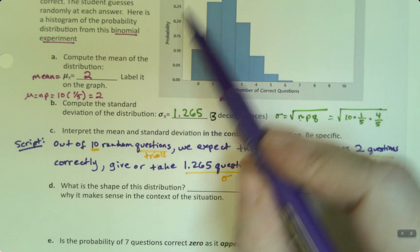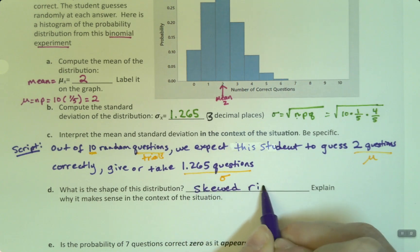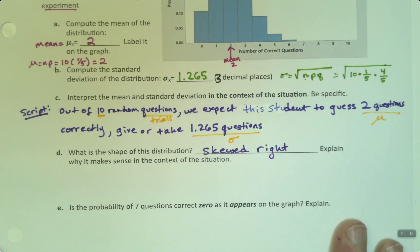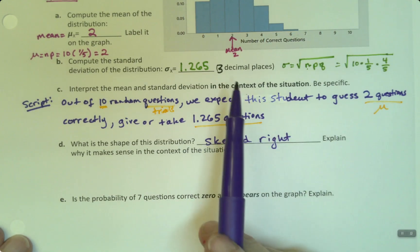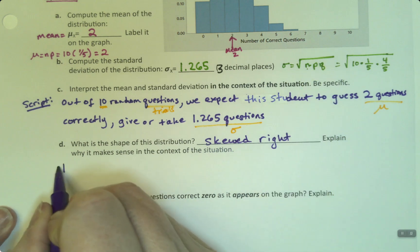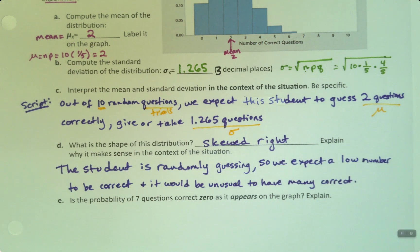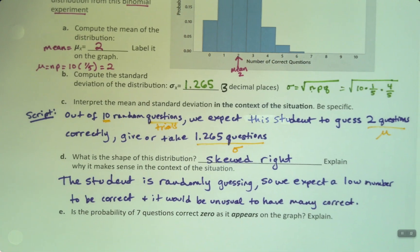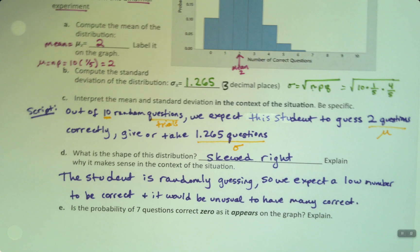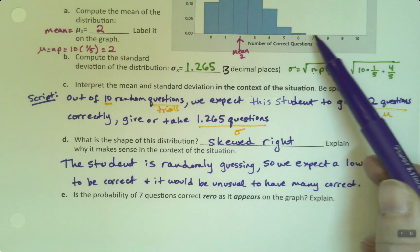What is the shape of this distribution? Well, it's obviously skewed right. Explain why it makes sense. Well, the student is randomly guessing. We don't expect them to get a lot of questions correct. It would be unusual to get a lot of questions correct. Because the student is randomly guessing, we expect a low number to be correct. That's why all the bars on the low side are nice and tall, because that's what we expect. We expect it a lot on the low side. It would be very unusual for the student to guess many correct. That's why it's tapering off to essentially zero over here.